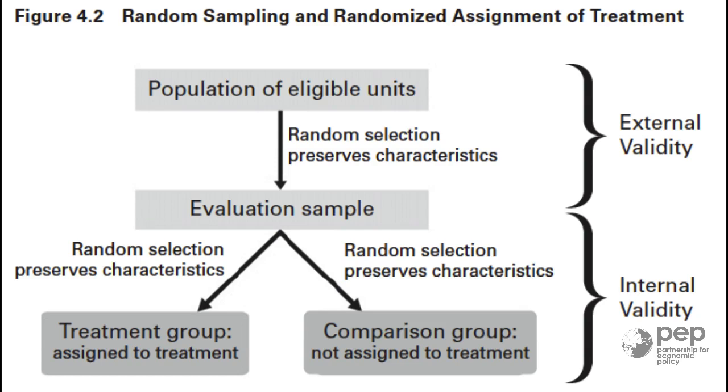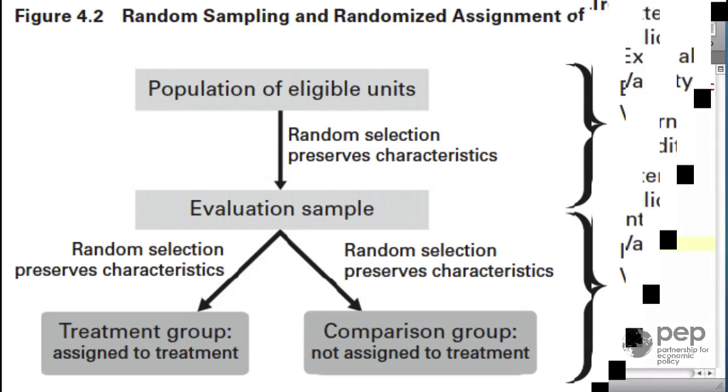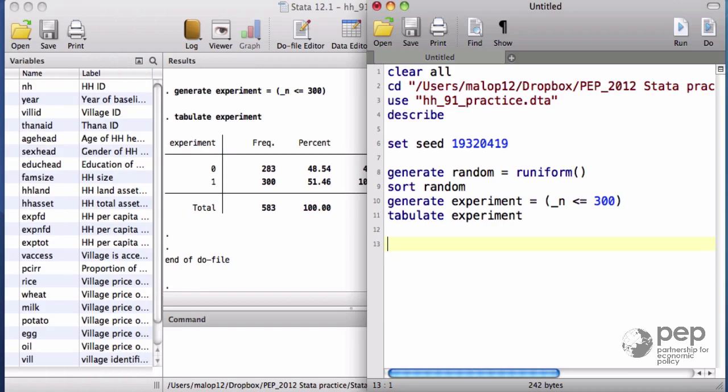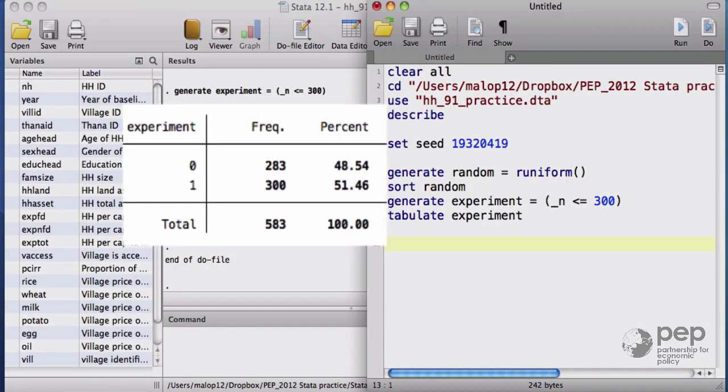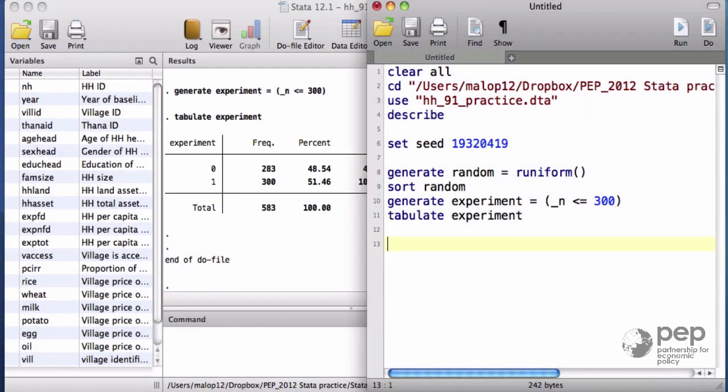Let me illustrate the idea of external validity using an example. Our current experimental sample contains 300 households out of 583, which is about 51%. I'm going to create a smaller experimental sample, let's say of 20 households. That's around 3 point something percent. The new dummy variable is experiment 20.